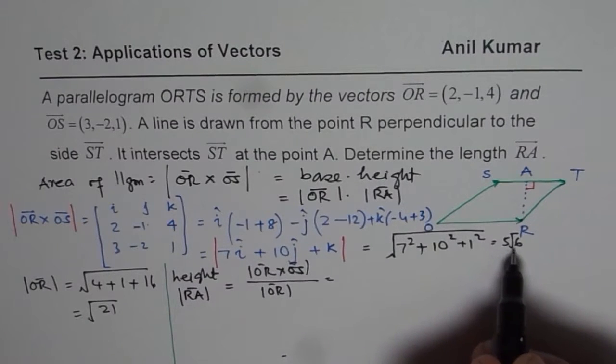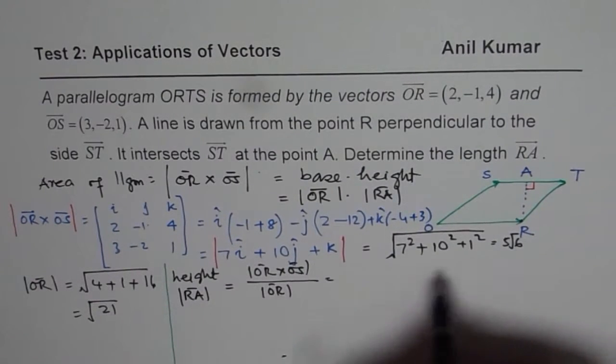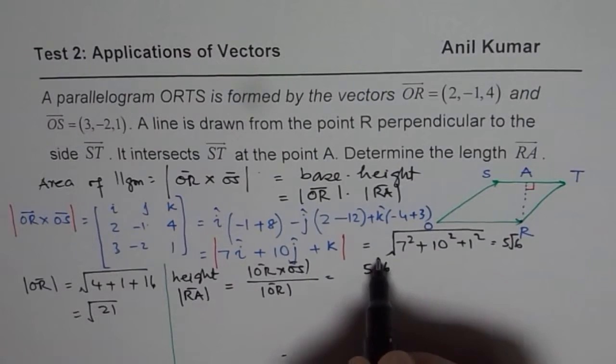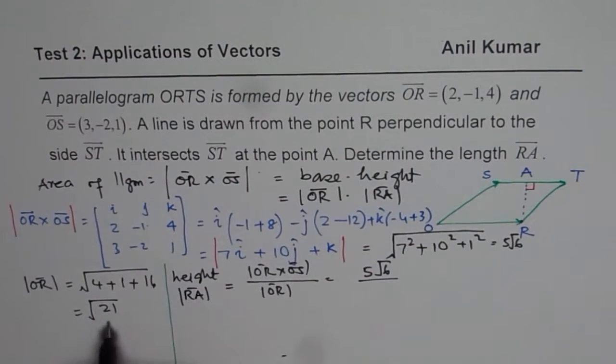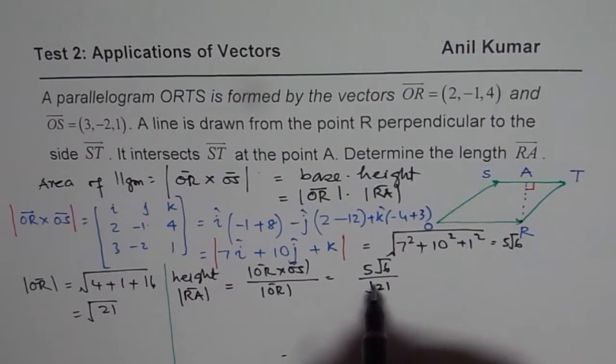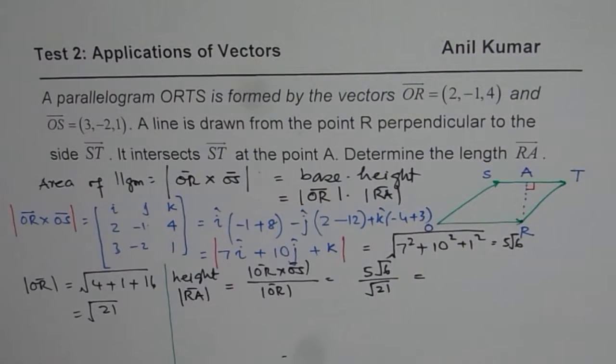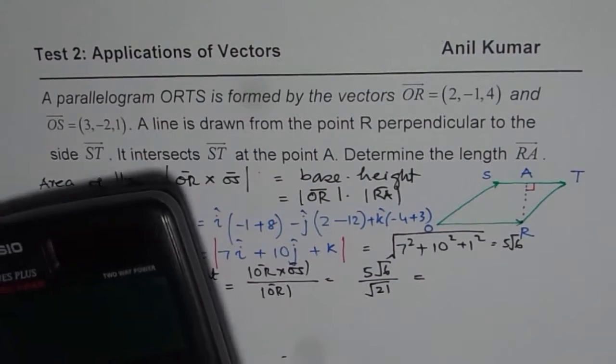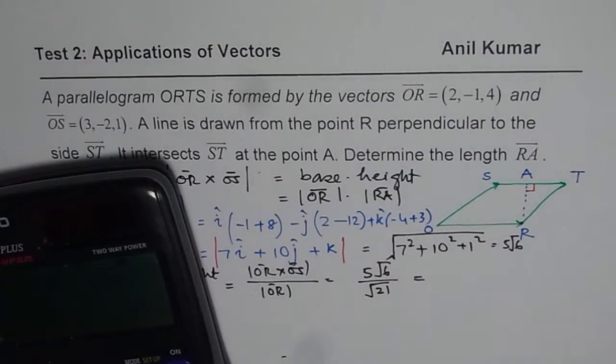So cross product will be found as the magnitude of cross product, as 5 square root 6. And magnitude of OR was square root of 21. Now that gives you the height, so we can find this ratio. So 5 square root 6 divided by 21.